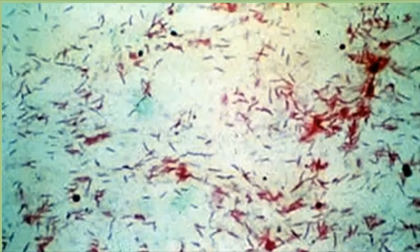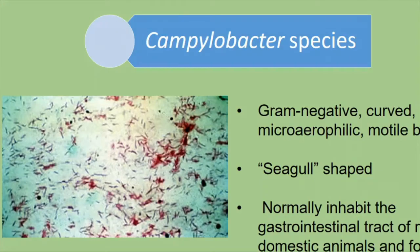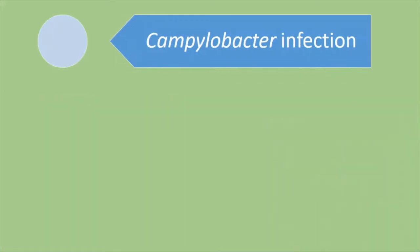The two clinical forms are the reproductive form — which presents as infertility, early embryonic death, and abortion — and the enteric form, which presents as diarrhea. The Campylobacter organism shows gram-negative rods that are curved in shape. 'Campylobacter' itself means curved rods. This shape is otherwise known as a 'seagull' shape, and it is a normal inhabitant of the intestinal tract of many domestic animals and fowls.